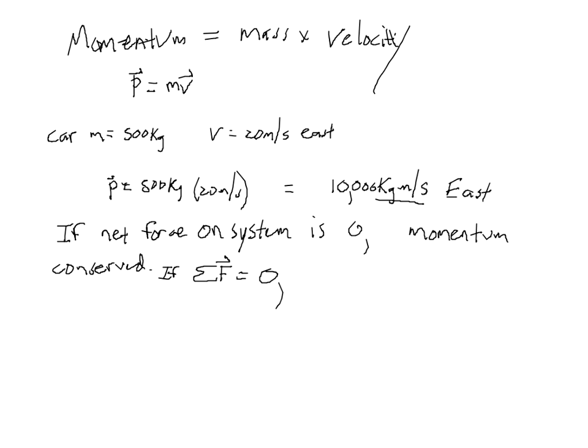In equation form, we write the sum of all forces on the system equals zero. If momentum is conserved, that means the momentum doesn't change, so we write delta P — change in momentum — equals zero. This makes momentum very useful for solving some problems that would be almost impossible to solve otherwise.